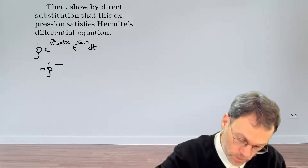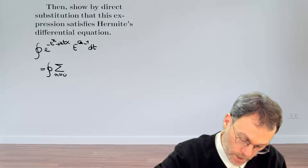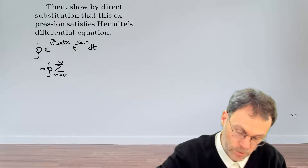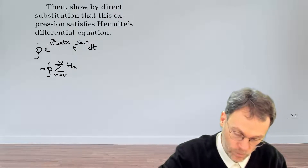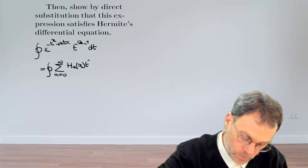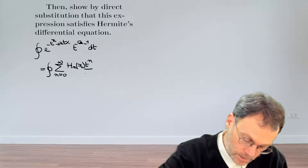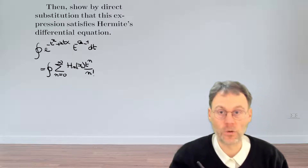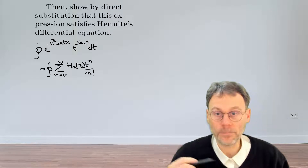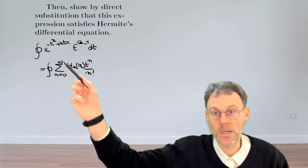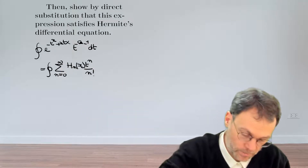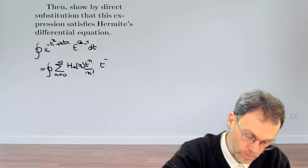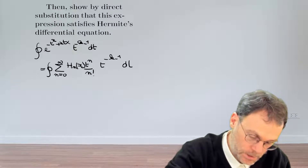So let's do just that. We have a sum from n=0 to infinity of the Hermite polynomial of order n, t to the power of n divided by n factorial. This is the expansion of the first factor — we should not forget about the second factor: t to the power of minus k minus 1, dt.